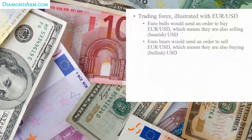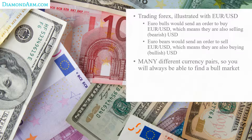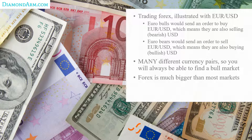If you're bearish on the euro, you would send an order to sell that pair, which means you are also buying — being bullish — the US dollar. There is an incredible number of forex pairs, so you will literally always be able to find some bull market or bear market out there. The forex market is much, much bigger than most markets — the only market bigger is the derivatives market. The cryptocurrency market is minuscule compared to forex.